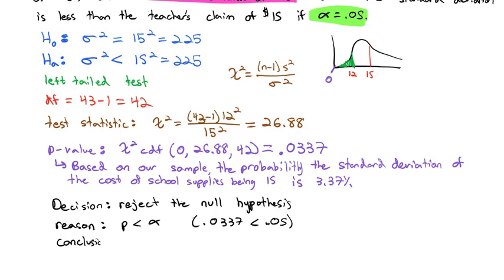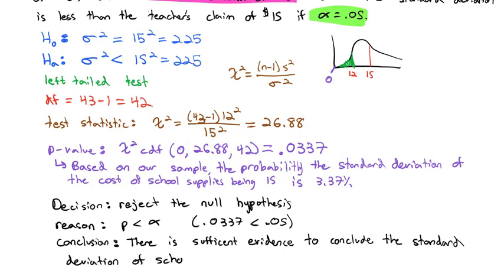And so our conclusion, which focuses on the alternative hypothesis in context, we can say that there is sufficient evidence to conclude the standard deviation of school supplies cost is less than $15.